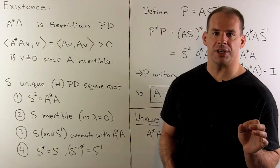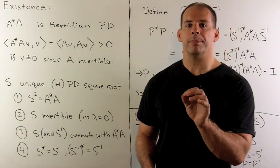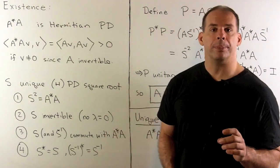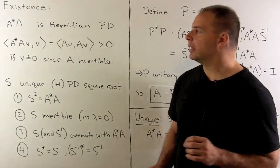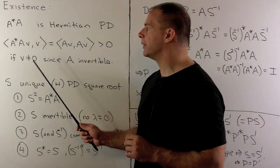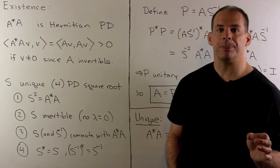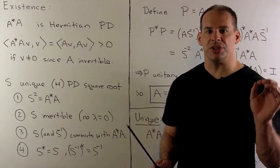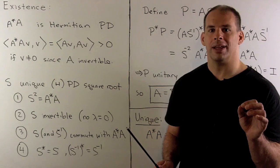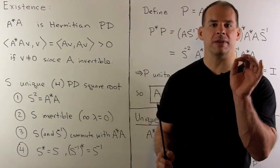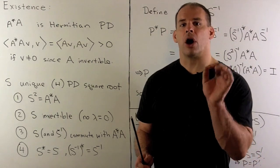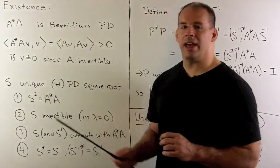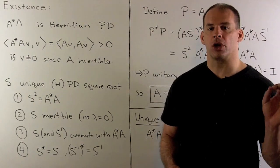First, let's show the factorization exists. By our scheme, instead of considering z-bar z, we consider A-star A. Now, A-star A is Hermitian positive definite. To see that, consider the inner product of A-star A v with v — we can push the A-star to the other side as an A. Since A is invertible, the only way Av equals zero is if v itself is zero, so this inner product is positive unless v equals zero. That gives us Hermitian positive definite. Because of that, A-star A has a unique Hermitian positive definite square root; we'll call it S.